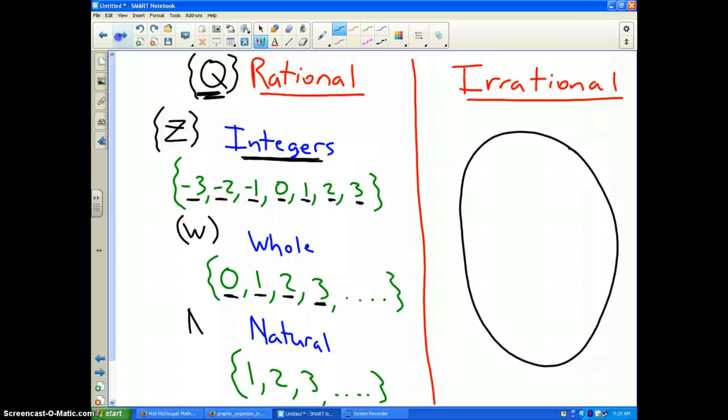And finally, the natural numbers. The natural numbers are the numbers 1, 2, 3, etc. They're just like whole numbers except the number zero is not included. And those are your number systems that we are going to deal with this year in Advanced Algebra 2.